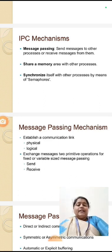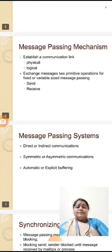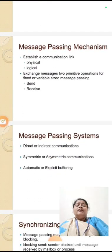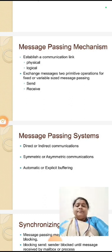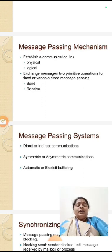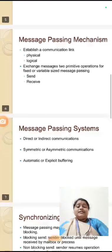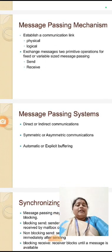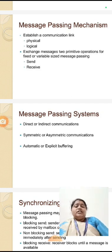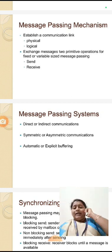In message passing mechanism, it establishes communication between physical and logical communication — describing how physically or logically the data is being communicated. It exchanges messages between two primitive operations for fixed or variable sized message passing. It can both send and receive messages. The mechanism establishes the communication link and then exchanges data using fixed size or variable size. These are the two aspects of message passing mechanism.